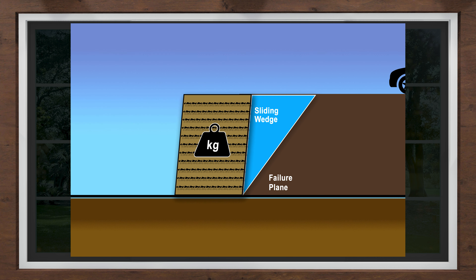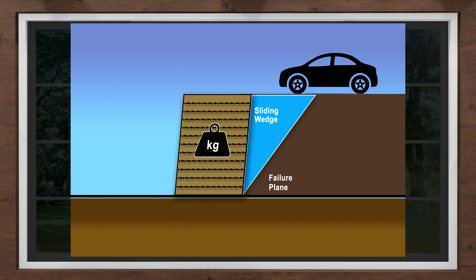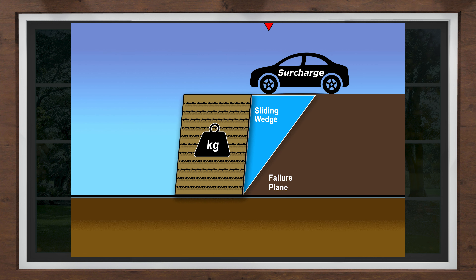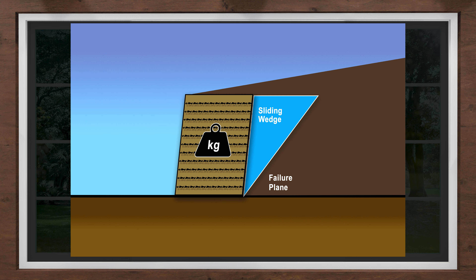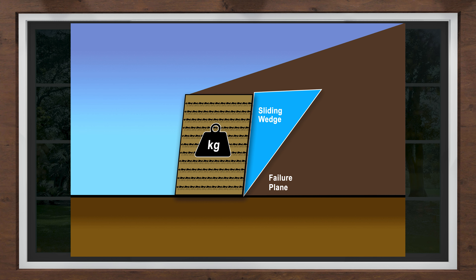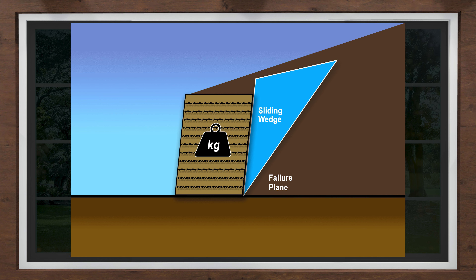Surcharges add to the pressure that the retaining wall will need to resist — their weight is added to the sliding wedge. Another type of surcharge is slopes. A slope adds area to the sliding wedge, adding more pressure to the retaining wall.